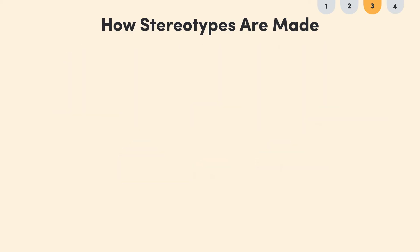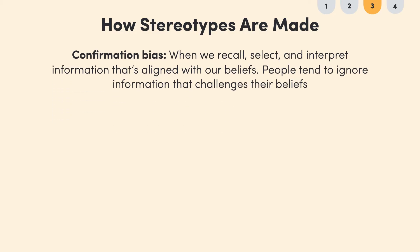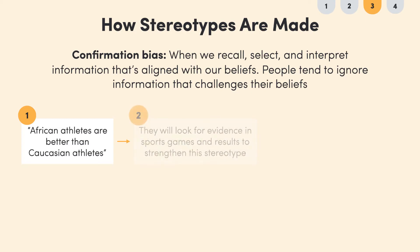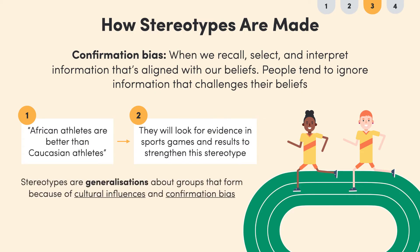Stereotypes are also developed and strengthened through confirmation bias. Confirmation bias is when we recall, select, and interpret information that's aligned with our beliefs. Because of this, people tend to ignore information that challenges their beliefs. So if a person thinks that African athletes are better than Caucasian athletes, they'll look for evidence in sports games and results to strengthen this stereotype. To sum up, stereotypes are generalizations about groups that form because of cultural influences and confirmation bias.